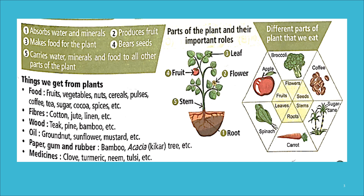Now let's understand the parts of plants and their important roles. They have been marked from one to five. Number one is root — root absorbs water and minerals from the soil. Number two is flower — the flower's main function is to produce fruit.